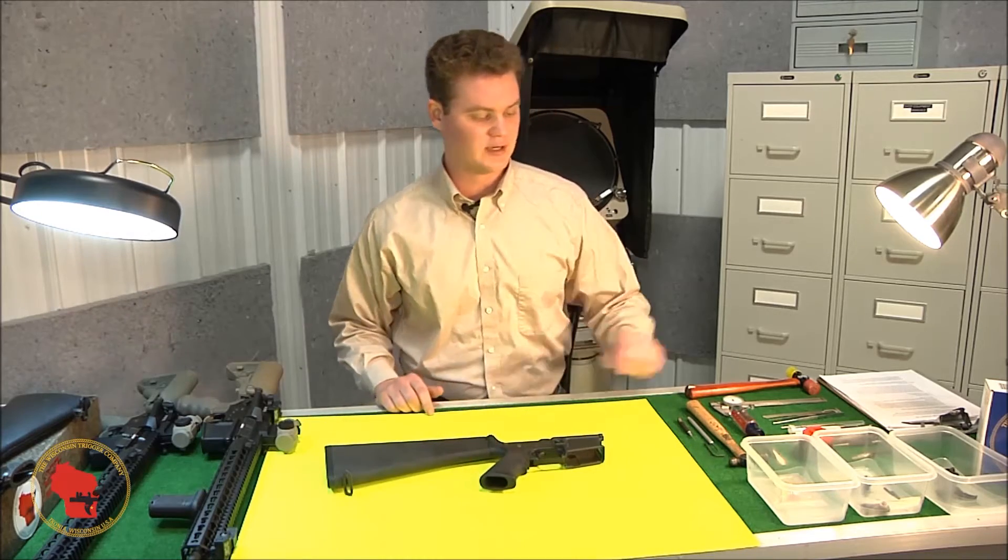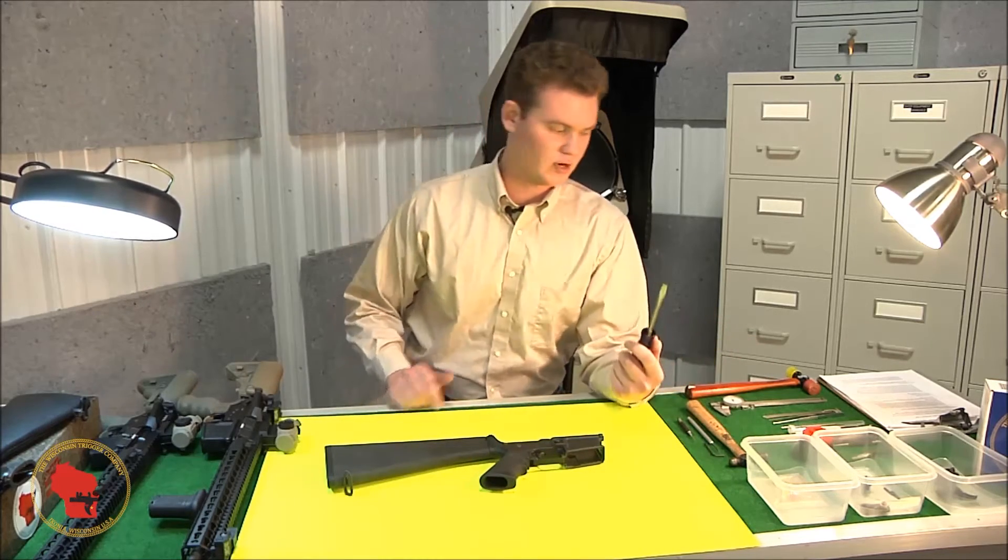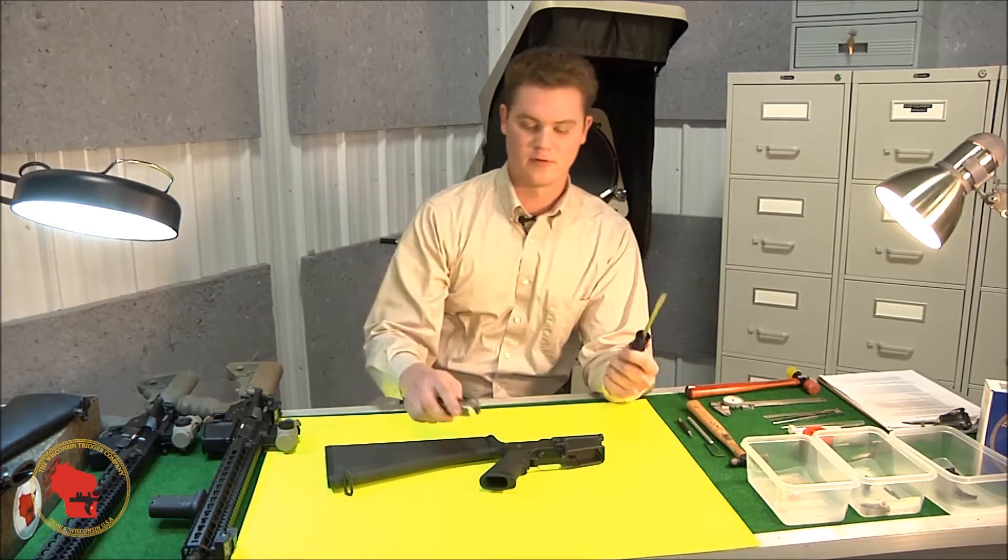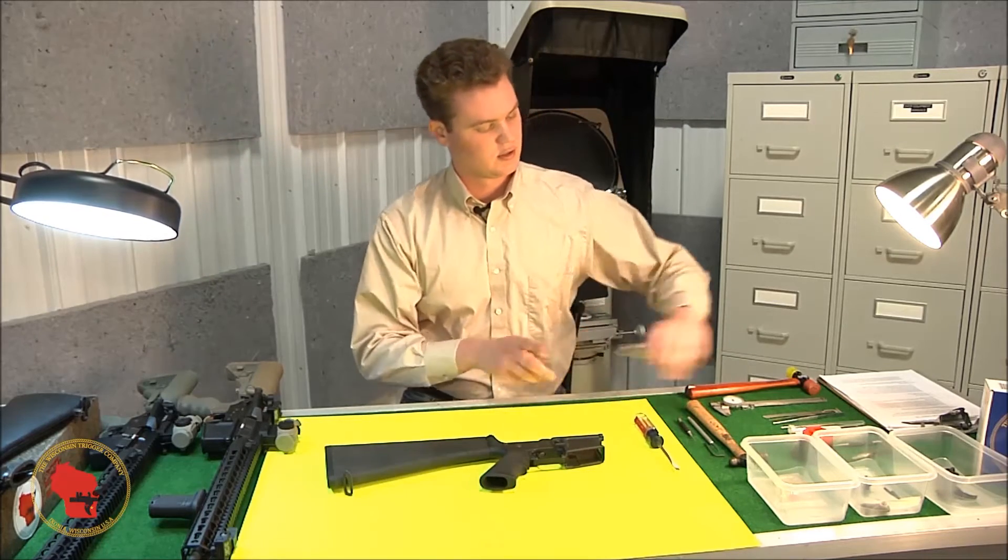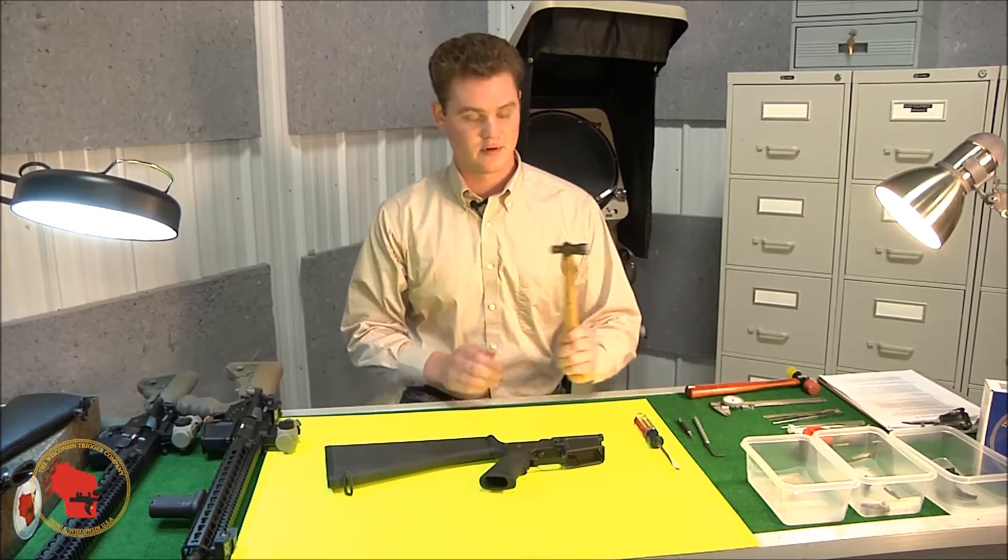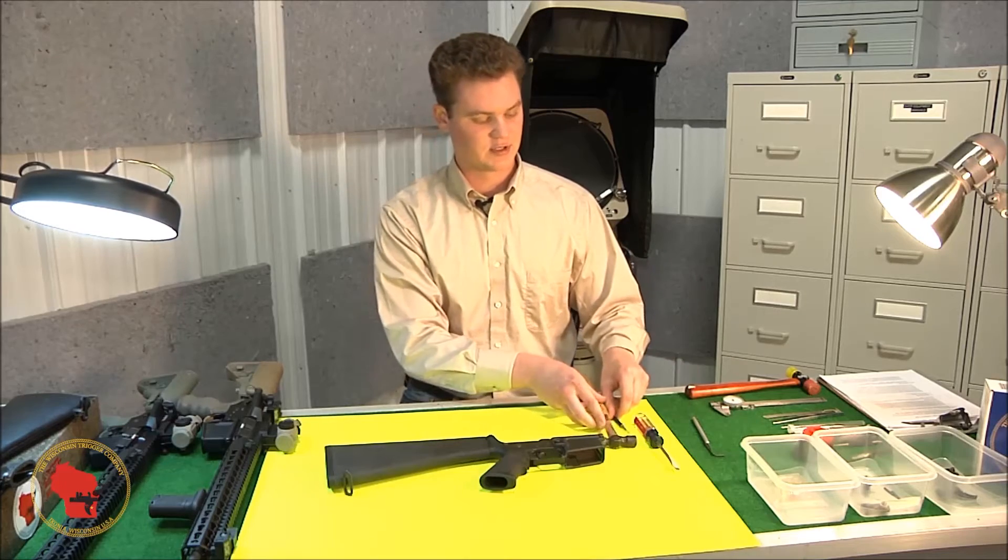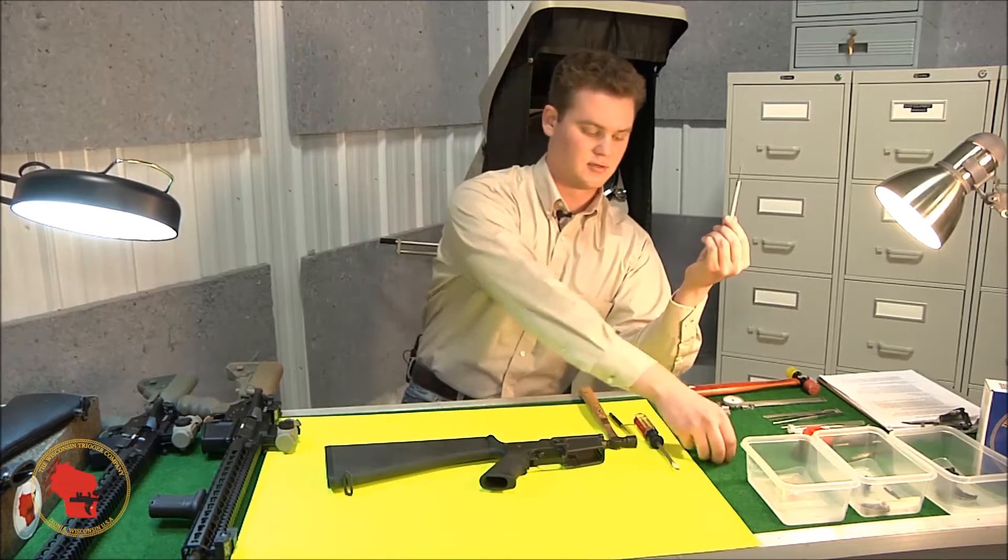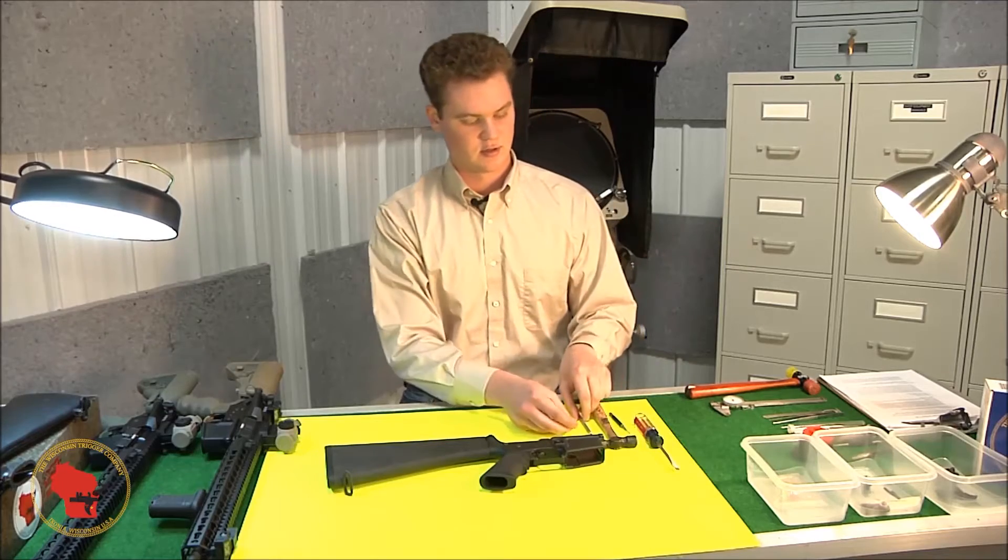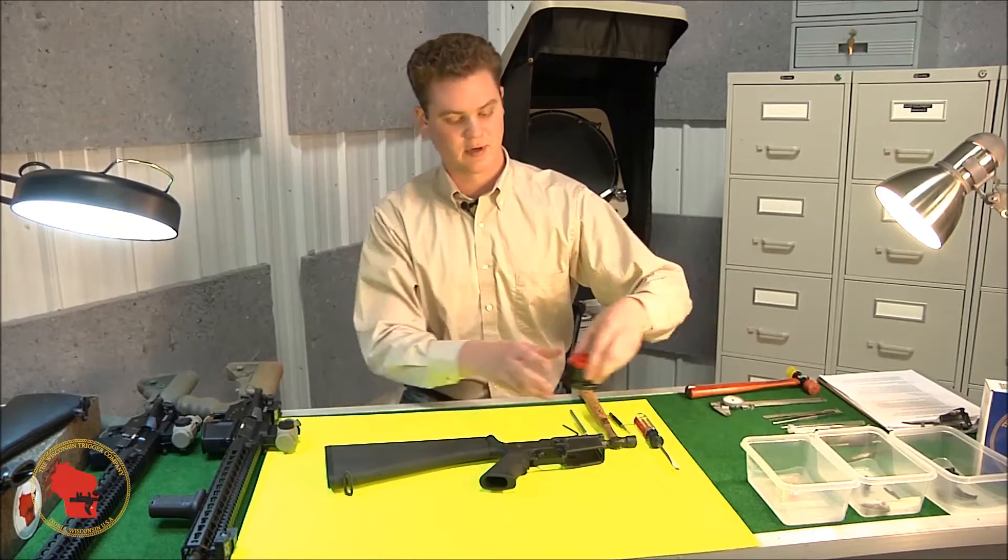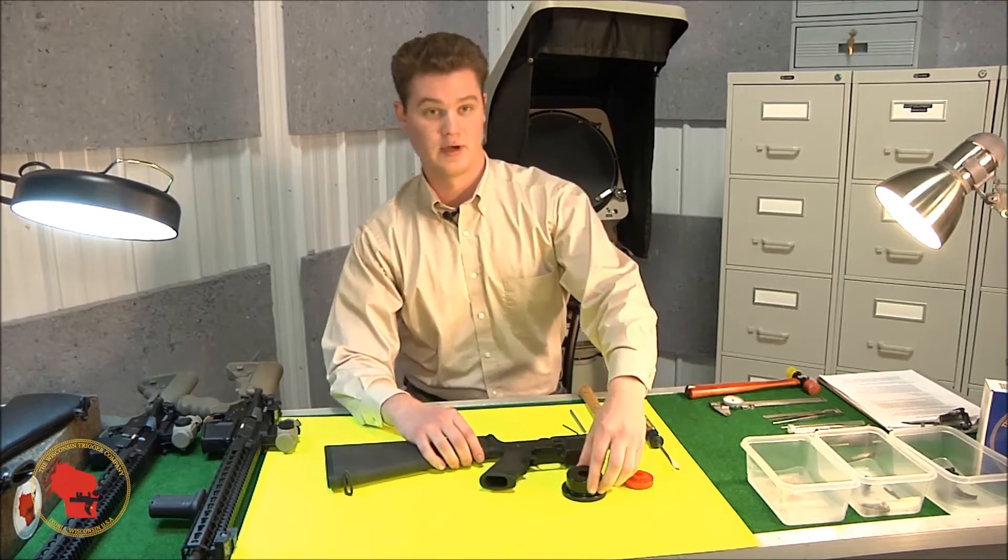The tools we're going to be needing: a flathead screwdriver or an allen wrench for your pistol grip, whichever one you need. You're gonna want a small hammer and a small punch for driving pins out. You're gonna need an allen wrench for setting the second stage disconnector, and also some disassembly pucks are very useful for capturing runaway pins.